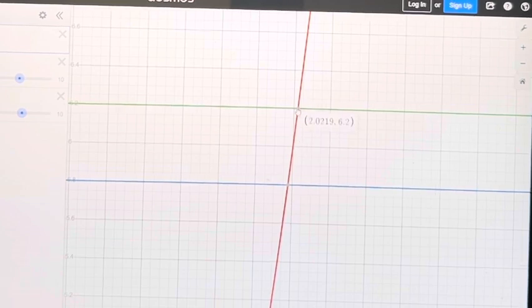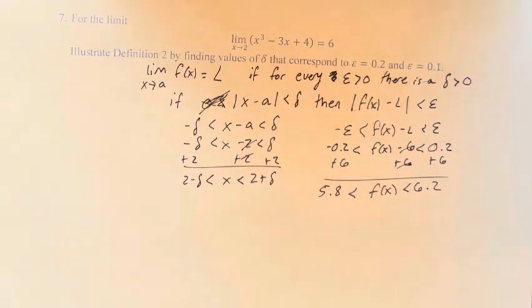And that first range is going to be 0.2 on the y-axis. And so the points that we can see this corresponds to are these intersection points here, where it leaves this range, so to speak, is at 2.0219 and 1.9774. So let me write those down.